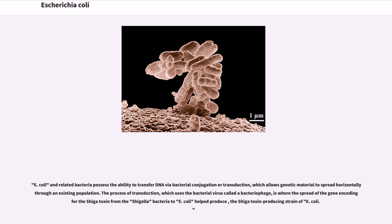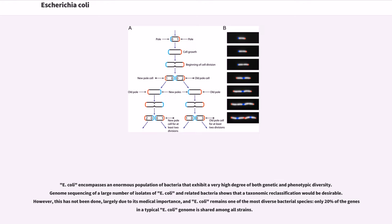E. coli and related bacteria possess the ability to transfer DNA via bacterial conjugation or transduction, which allows genetic material to spread horizontally through an existing population. The process of transduction, which uses the bacterial virus called a bacteriophage, is where the spread of the gene encoding for the Shiga toxin from Shigella bacteria to E. coli helped produce the Shiga toxin-producing strain of E. coli. E. coli encompasses an enormous population of bacteria that exhibit a very high degree of both genetic and phenotypic diversity. Only 20% of the genus in a typical E. coli genome is shared among all strains.